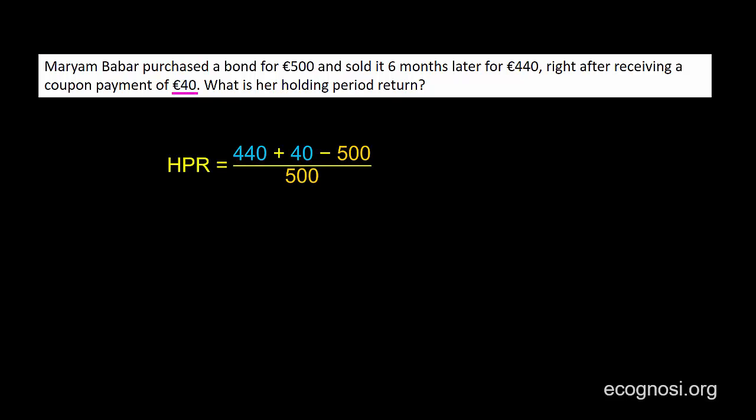So the holding period return is 440 plus 40 minus 500, divided by 500. I also use different colors for the end of period and beginning of period values to make it clear that the end of period value also comprises the 40 euro coupon payment. This is the same as 440 plus 40 over 500 minus 1, which gives us a negative 4% holding period return. Specifically, this is the 6-month holding period return.